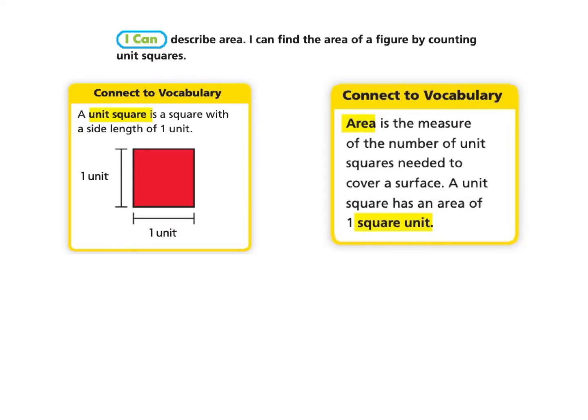Let's review some vocabulary to help understand this lesson. The first vocabulary word is unit square, defined as a square with a side length of one unit.